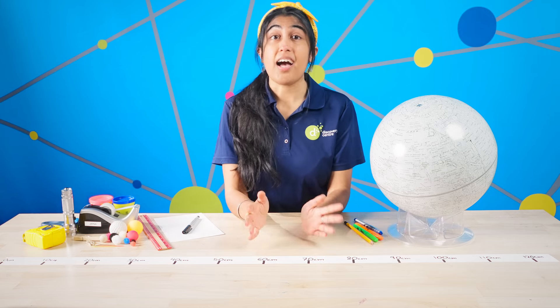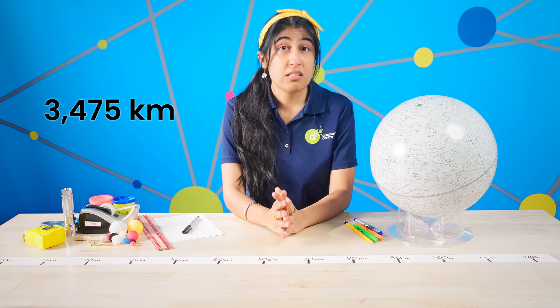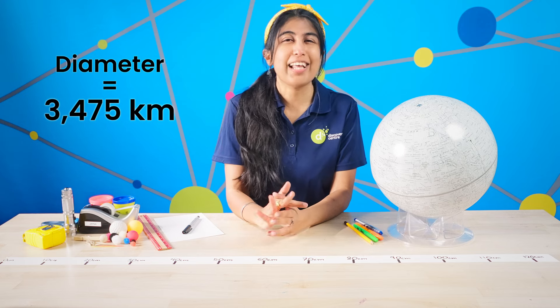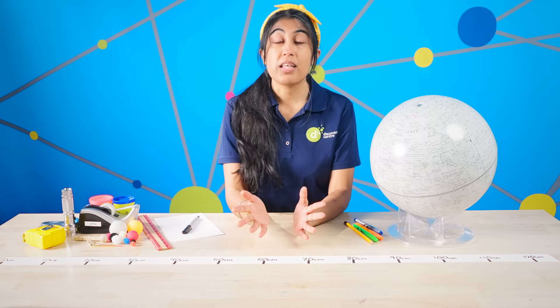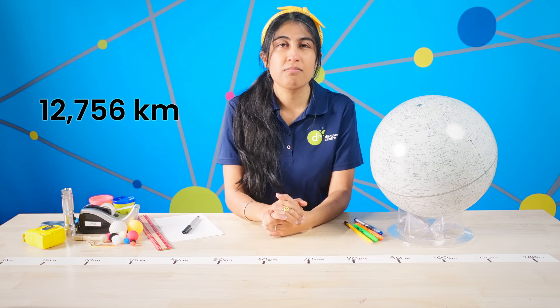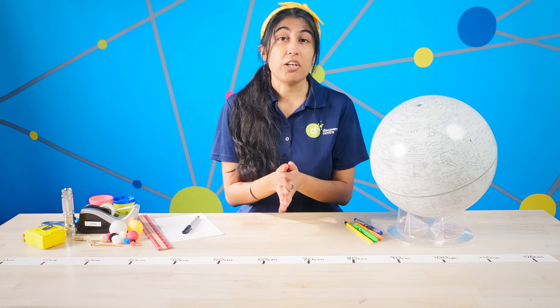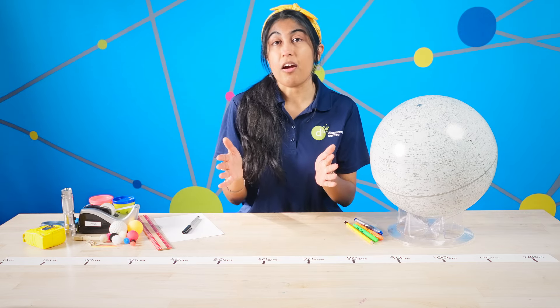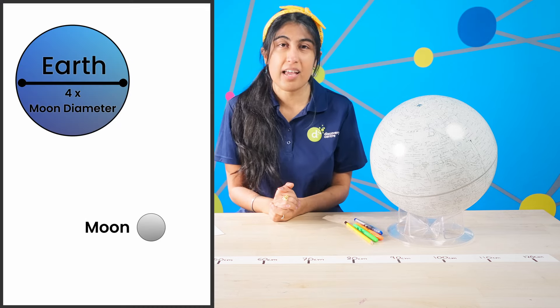Let's start with size. The actual Moon is about 3,475 kilometers wide — that is, its diameter is 3,475 kilometers, about the distance between Halifax and Calgary. The Earth's diameter is 12,756 kilometers. Since the Earth and the Moon are spheres, we use diameter to describe how wide across they are. We can see that the Earth's diameter is about four times the diameter of the Moon.